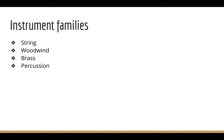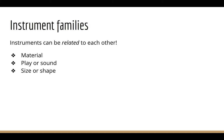There are four instrument families that we are going to talk about: the string family, the woodwind family, the brass family, and the percussion family. You might be wondering what makes an instrument a part of an instrument family. Instrument families are interesting because just like in human families, some instruments can be related to other instruments — it might be because they're made out of similar materials, the way you play it, the way it sounds, or a similar shape or size.